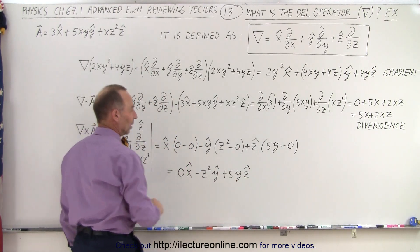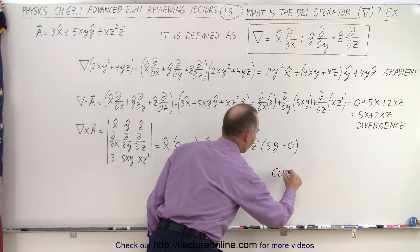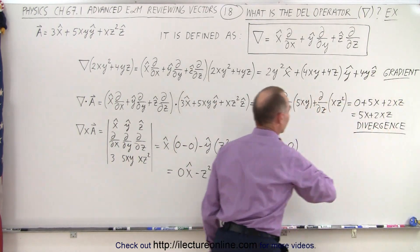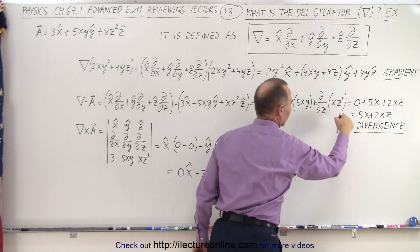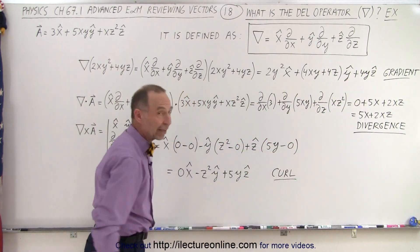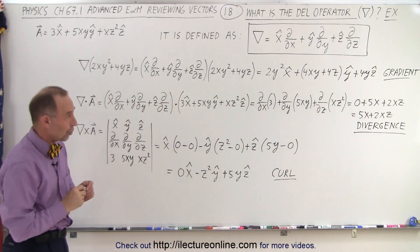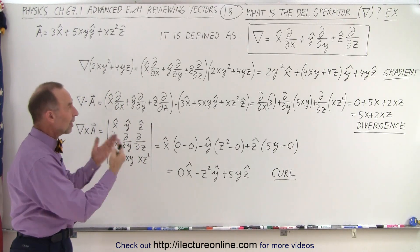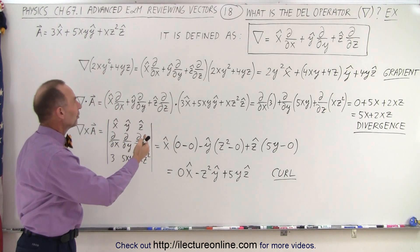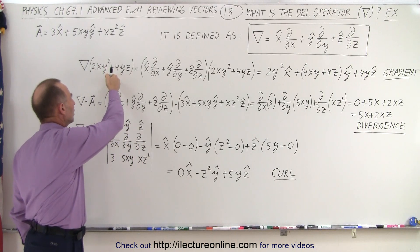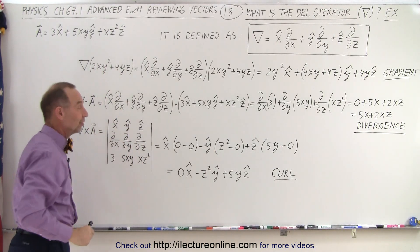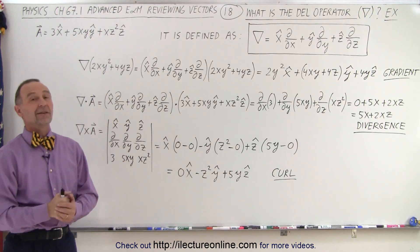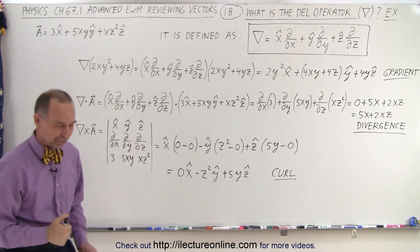This result is called the curl. So to summarize: the gradient is a vector quantity, the divergence is a scalar quantity, and the curl is again a vector quantity. Now you know how to use the DEL operator on a scalar function or a vector function, either via the dot product or the cross product. We'll show you what those things mean in more detail later. Thank you.